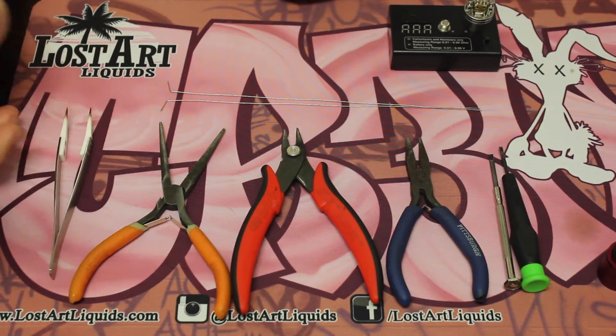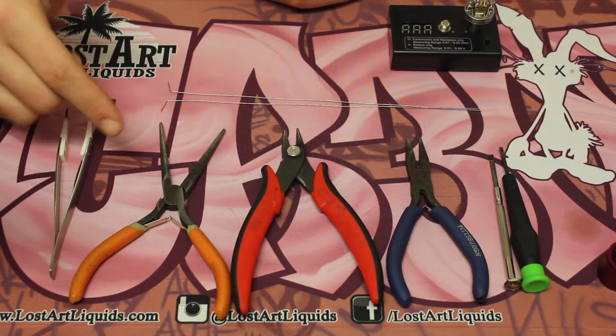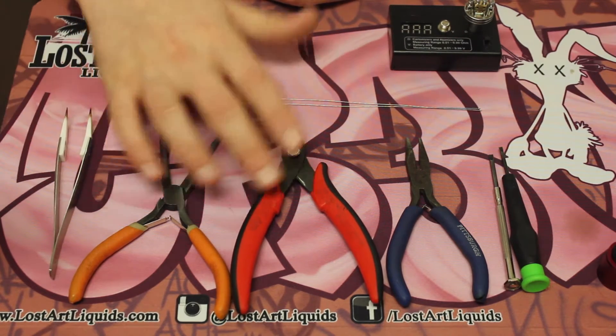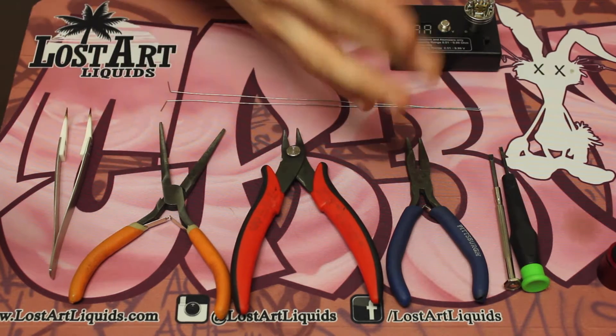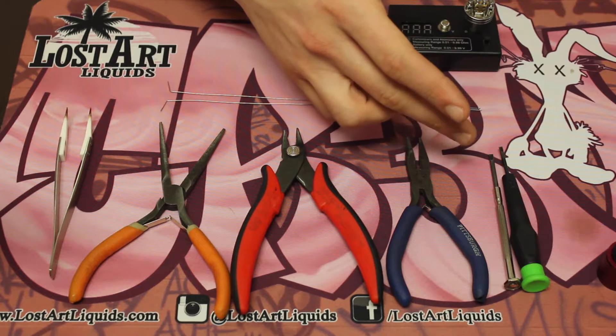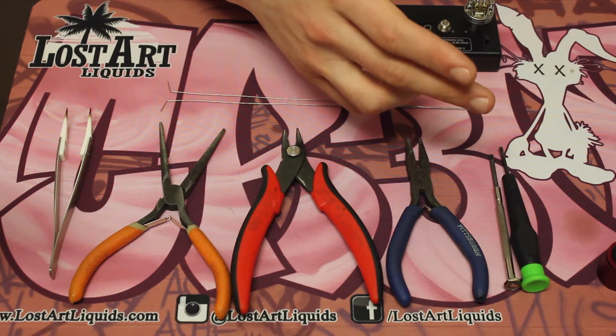Alright guys, so for tools we need ceramic tip tweezers, but they're not essential. You also need pliers, flush cutters, and a secondary pair of pliers just in case you twist your wire while doing it. You're gonna need a 2.4mm screwdriver and also another screwdriver to screw down your postal screws.